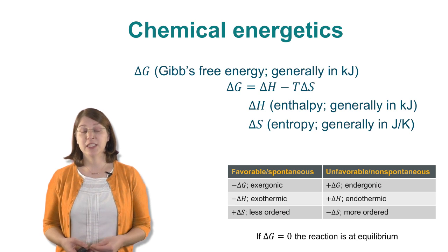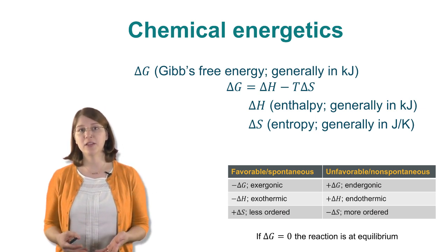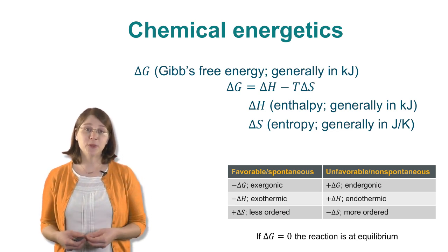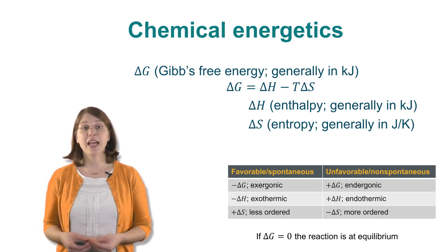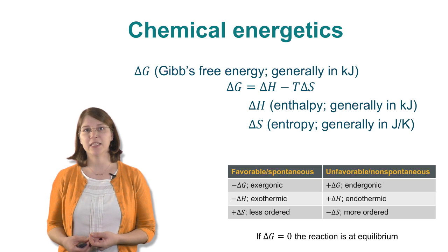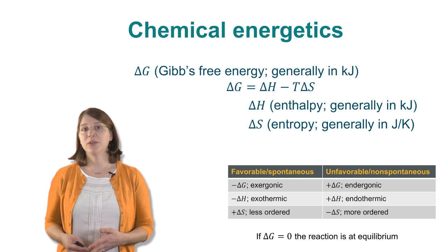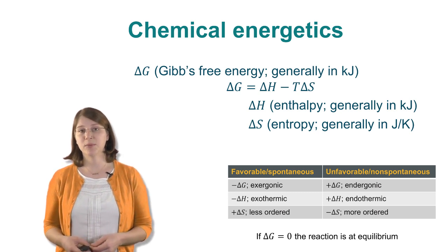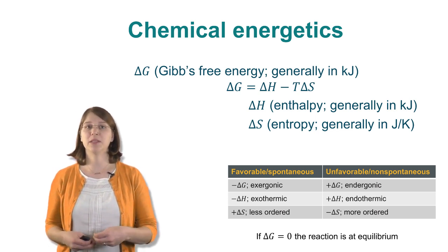If the free energy, delta G, is negative, it's called exergonic — it releases energy and it's favorable. Similarly, negative enthalpies are favorable and those are called exothermic. A favorable entropy is an increase in entropy, so a positive delta S, which will contribute to a negative free energy via the term negative T delta S. An unfavorable enthalpy is a positive term, while a negative entropy is a more ordered or non-spontaneous process. We use the terms favorable and spontaneous pretty interchangeably. And if free energy equals zero, the reaction is at equilibrium and won't proceed in either direction.